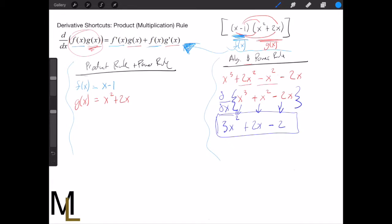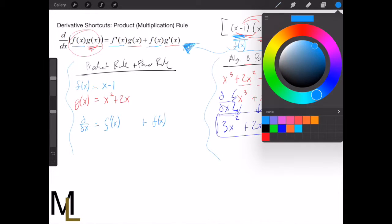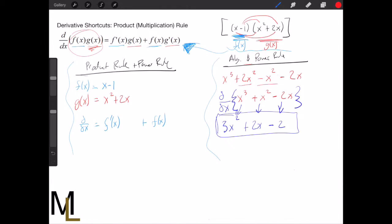So we're going to take the f(x) and g(x) and plug it into the product rule. According to the product rule, the derivative is going to equal f'(x) times g(x) plus f(x) times g'(x).